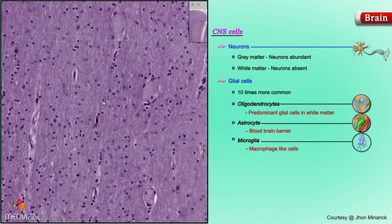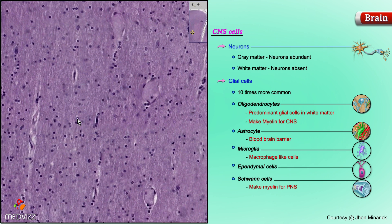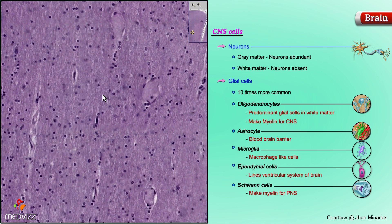The last two types of glial cells are not routinely seen in the substance of the brain itself. They're seen either lining the ventricular system — which are the ependymal cells — or they're seen in peripheral nerves, which are the Schwann cells. We've already seen many Schwann cells because every time you looked at a peripheral nerve and there was this wavy component with a nucleus in it, that was the nucleus of a Schwann cell. Schwann cells make myelin for the peripheral nervous system, and oligodendrocytes make myelin for the central nervous system. Ependymal cells line the ventricular system and are the only cells that look clearly like a simple columnar epithelium.